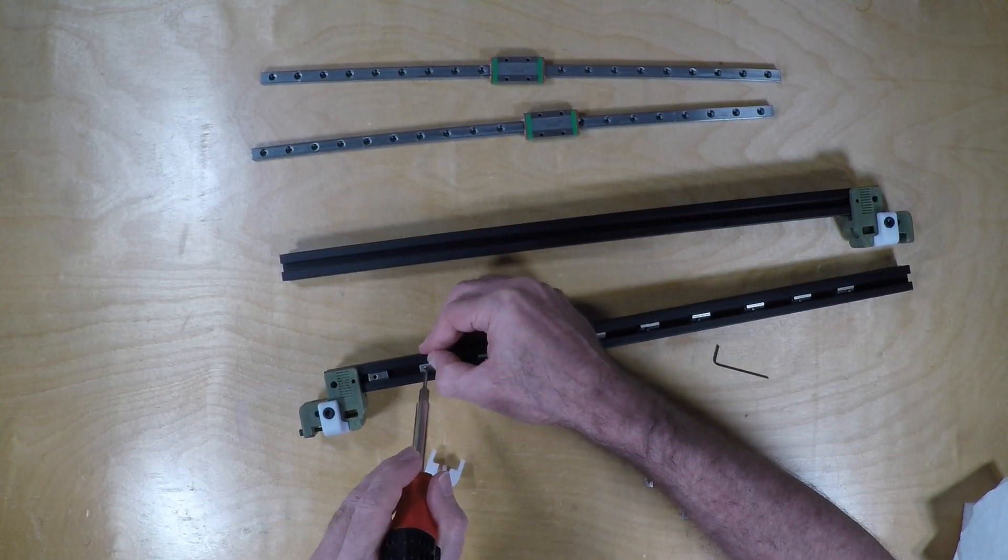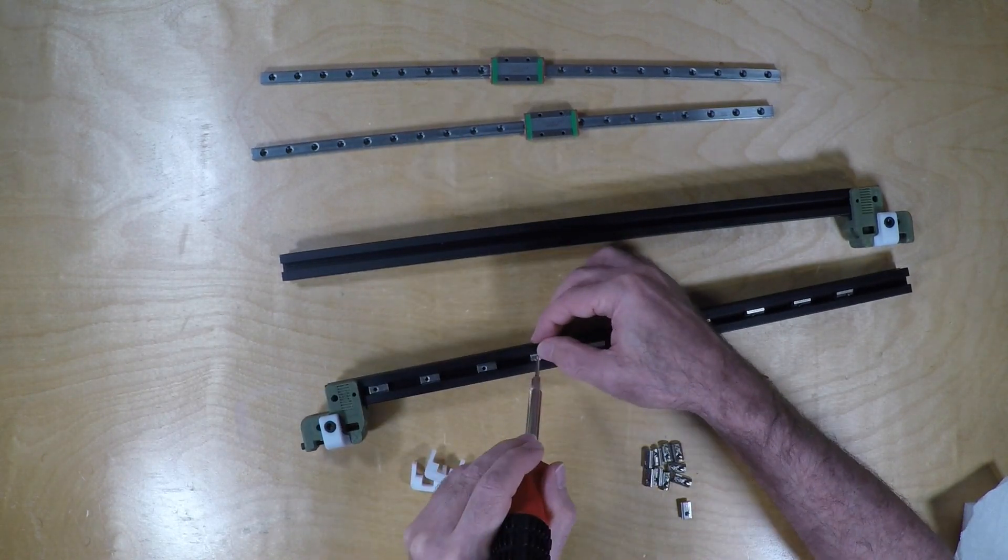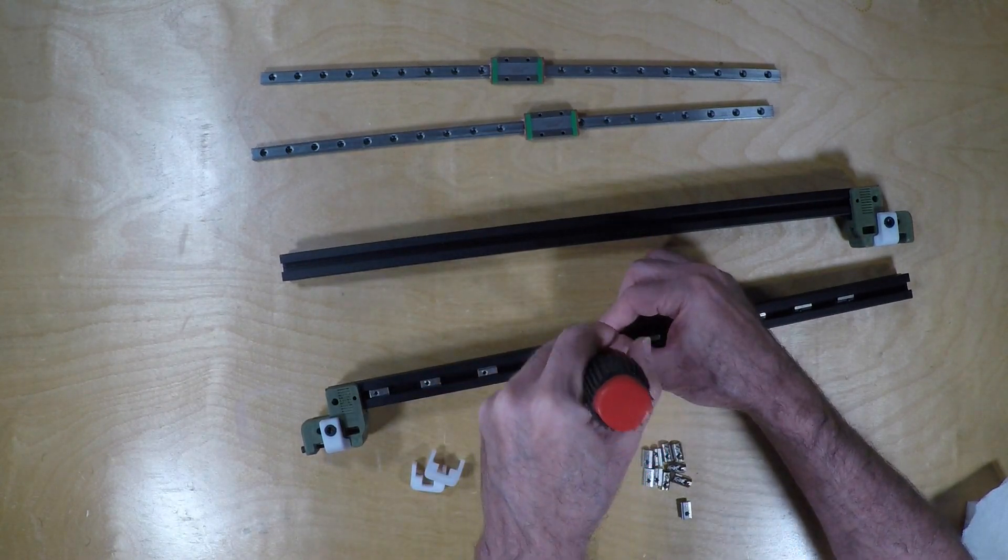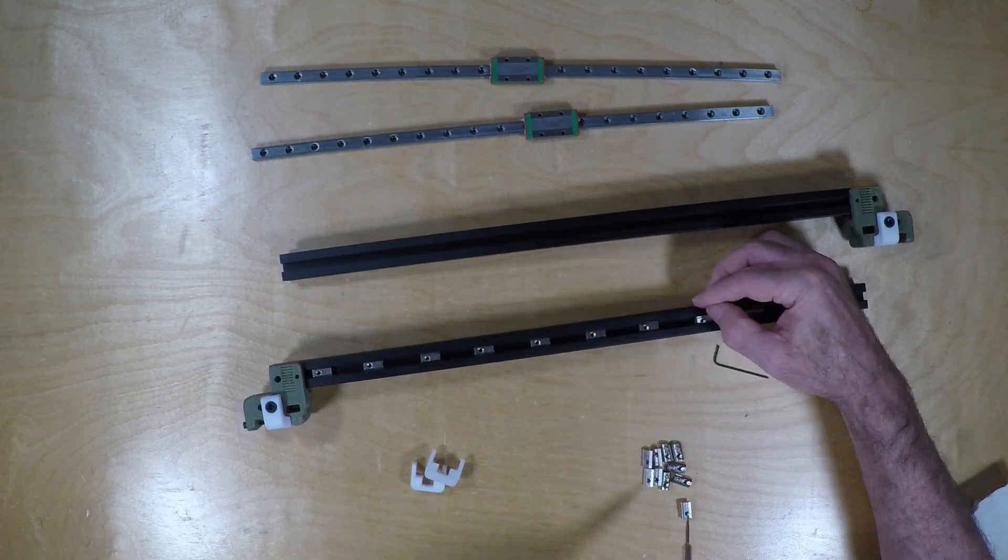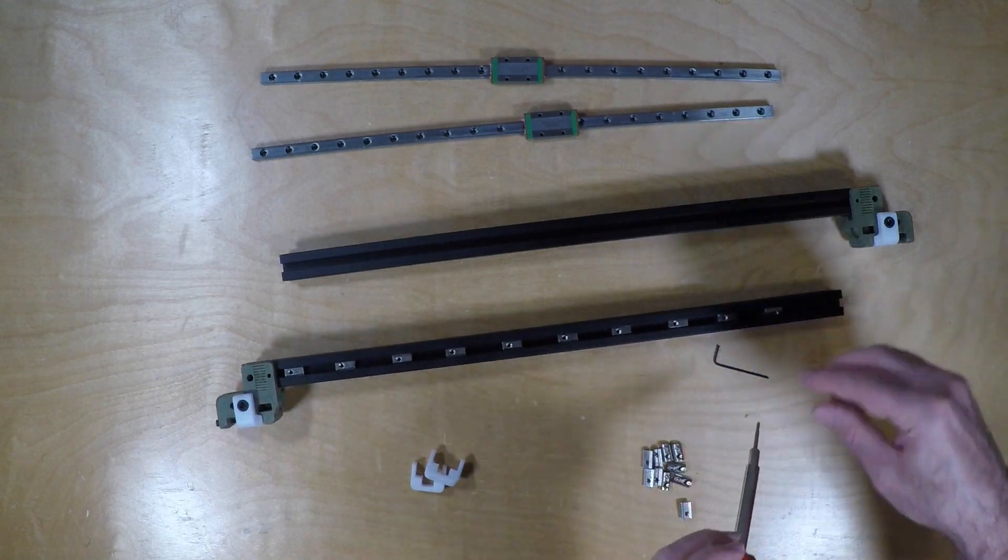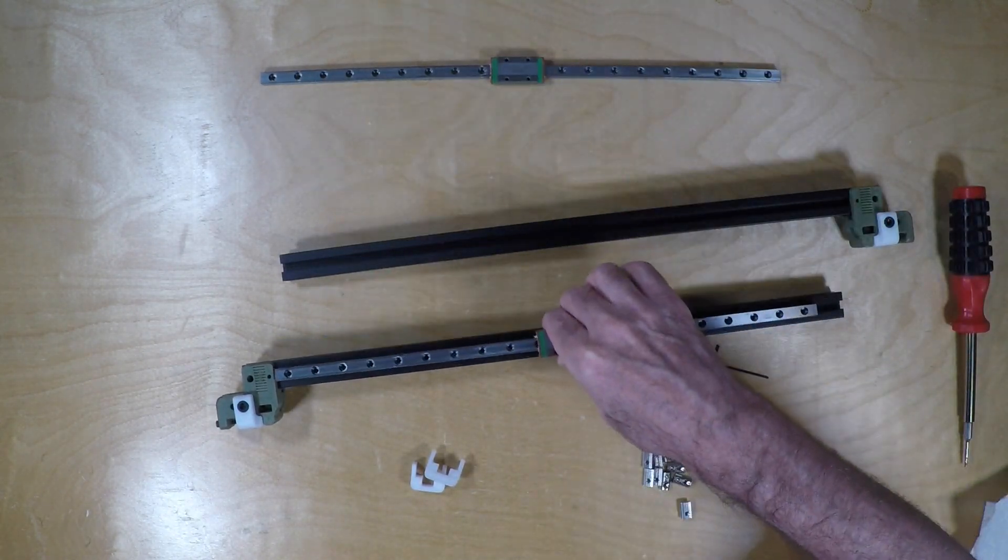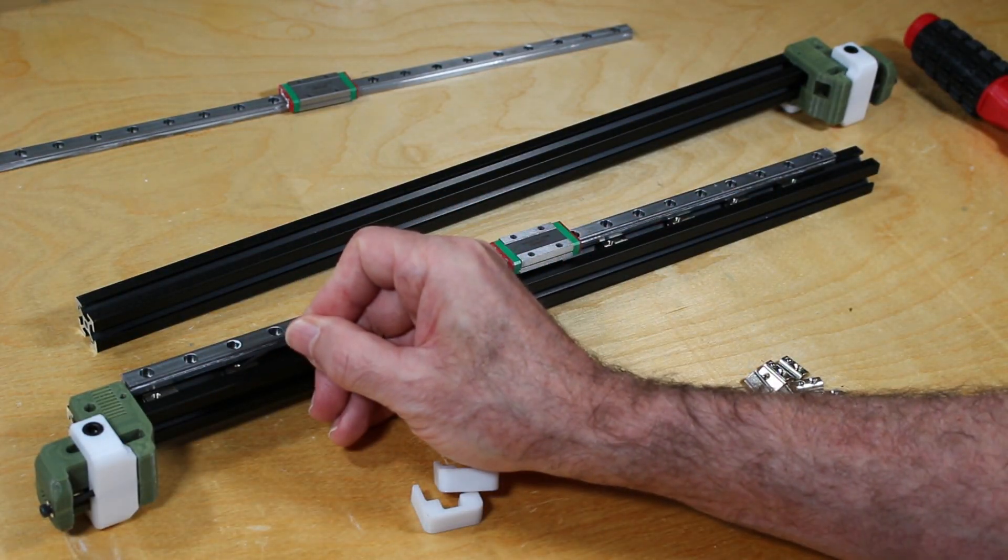And then you can use another Allen key such as this. Just push the T-nuts down with one hand while using the Allen key in the hole to force it in by twisting forward, or rather pushing forward. And it'll go fairly quick. Although again, this is speeded up.